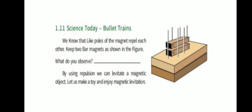Science Today. We know that like poles of magnets repel each other. If we keep two powerful magnets as shown in the figure — north-north repulsion or south-south repulsion — this process is complete.